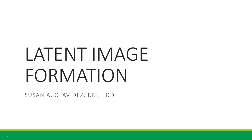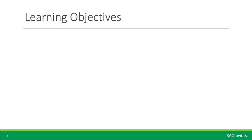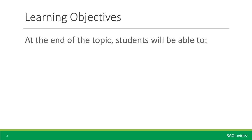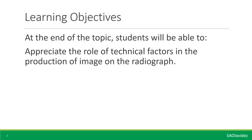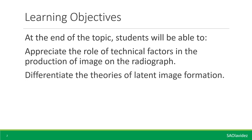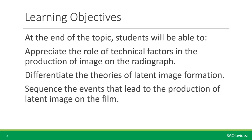Our next topic is about latent image formation. At the end of the topic, students will be able to appreciate the role of technical factors in the production of image on the radiograph, appreciate the theories of latent image formation, and sequence the events that lead to the production of latent image on the film.